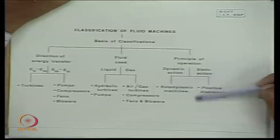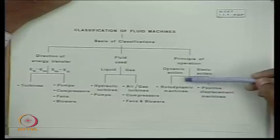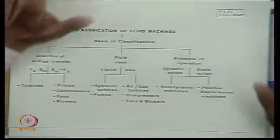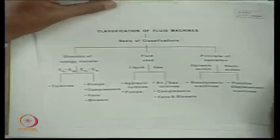On the other hand, there are machines in large use for engineering applications known as rotodynamic machines, based on the dynamic action of the fluid. In these machines, there occurs a continuous motion of the fluid and a part of the machine. Because of the change in momentum due to this continuous relative motion, the conversion of energy takes place from mechanical to stored energy or stored energy to mechanical energy.